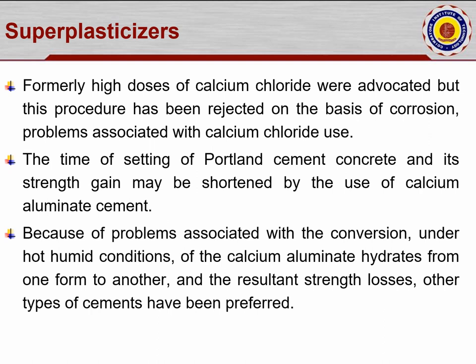Formerly, high doses of calcium chloride were advocated, but this has been rejected due to corrosion problems as per IS 456. The time of setting of Portland cement concrete and its strength gain may be shortened by the use of calcium aluminate cement. However, because of problems associated with the conversion — under hot and humid conditions — of the calcium aluminate hydrate from one form to another, with resultant strength losses, other types of cements have been preferred.